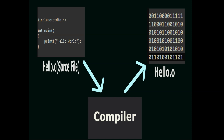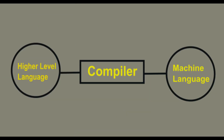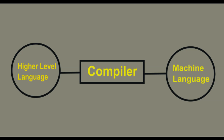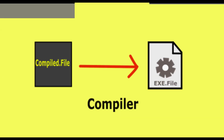The compiler reads the entire source code, checks it for errors, and translates it into a low-level language that the computer's processor can understand directly. This compiled code is then saved as an executable file, ready to be run.